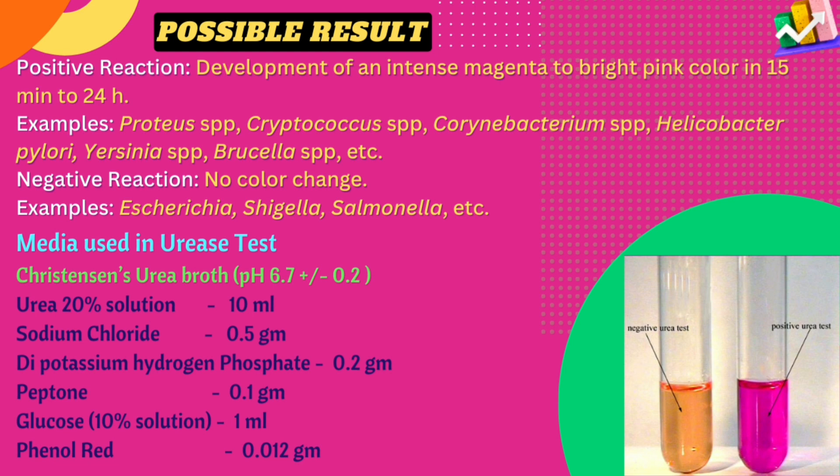For negative reaction, there is no color change. Examples of urease-negative microorganisms include Escherichia coli, Shigella, and Salmonella species. The medium used for the urease test is Christensen's urea broth.